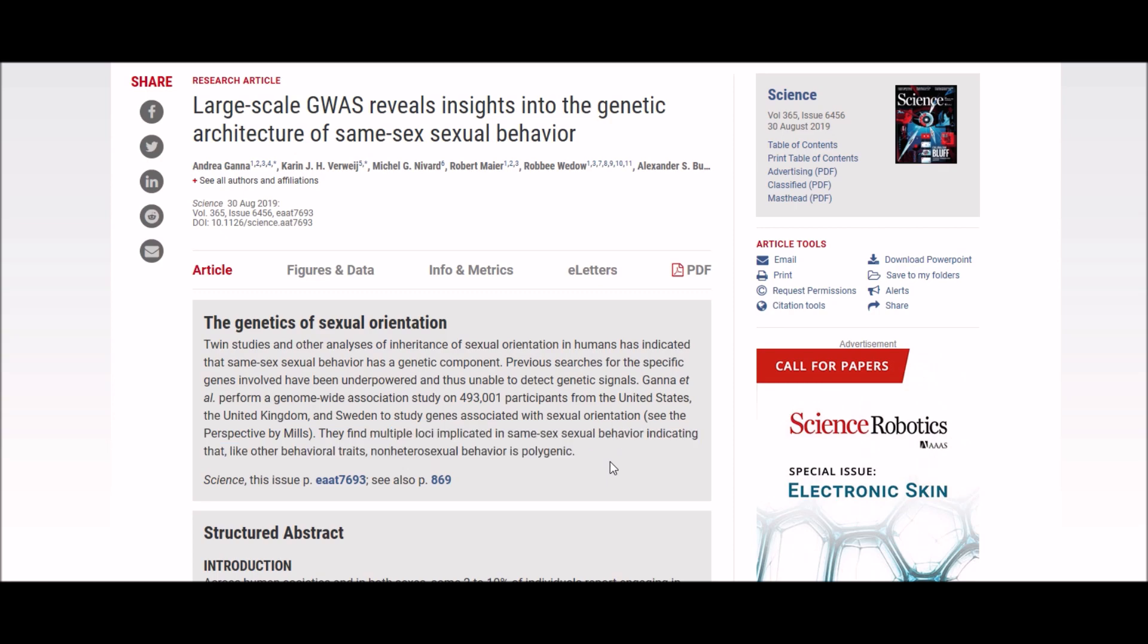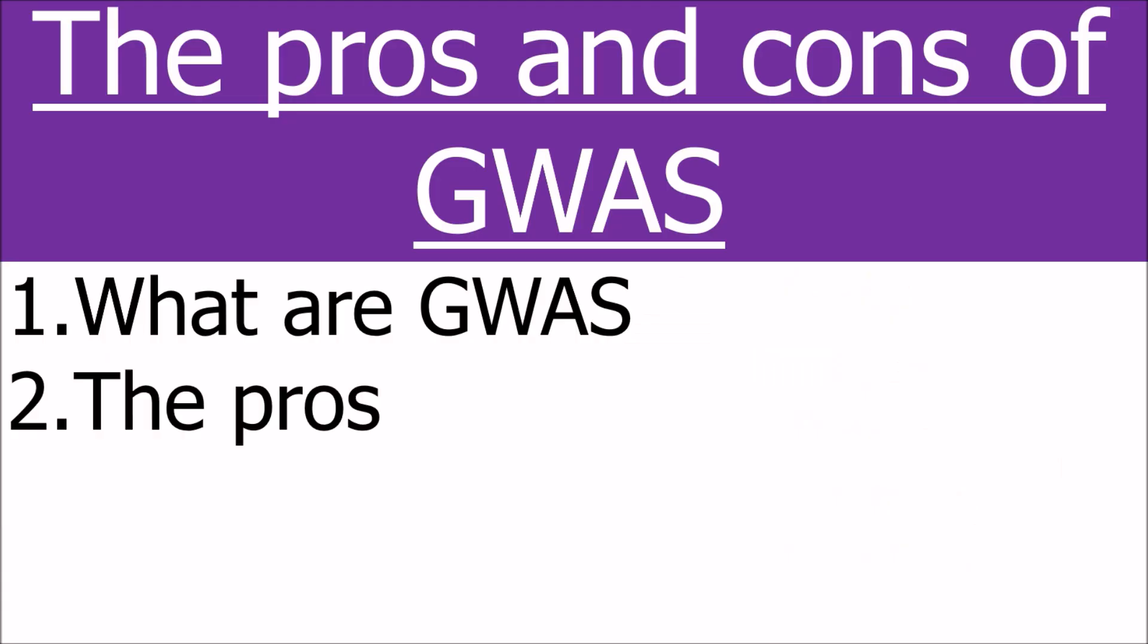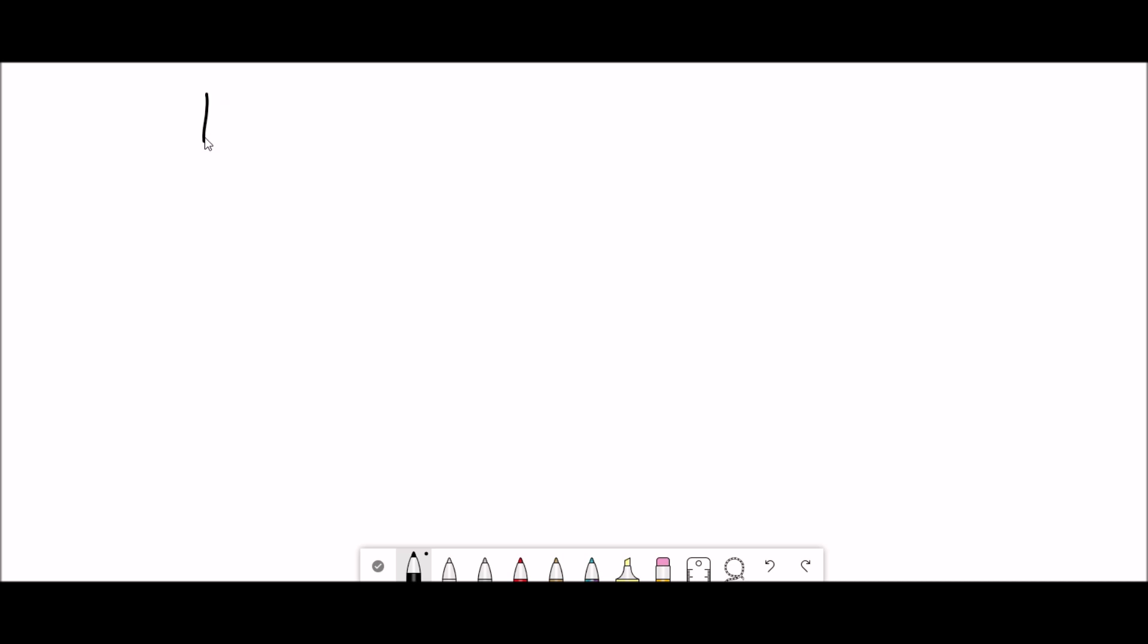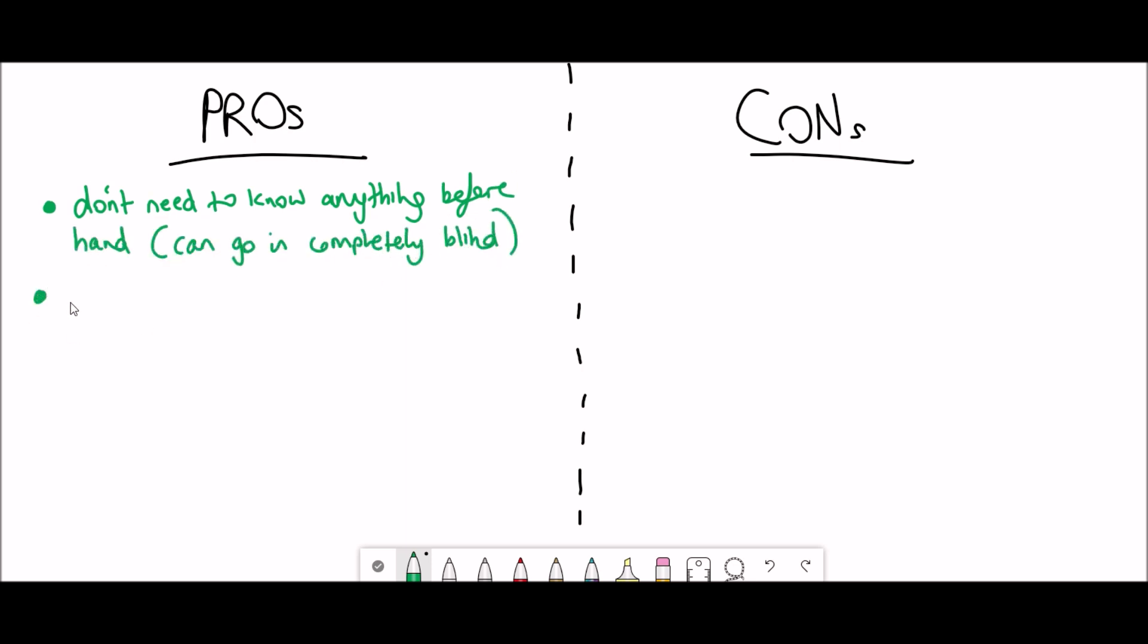But why do them? What are the benefits of genome-wide association studies? Firstly, the beauty of genome-wide association studies is that they are hypothesis free. You don't need to know anything beforehand. Starting from nothing you can identify loci that have genes that are likely associated with the phenotype that you're studying, and then these genes can be further characterized and understood.